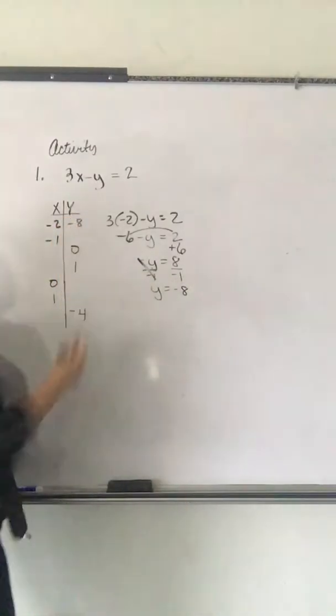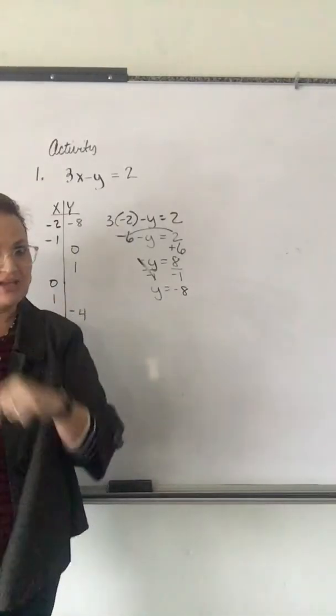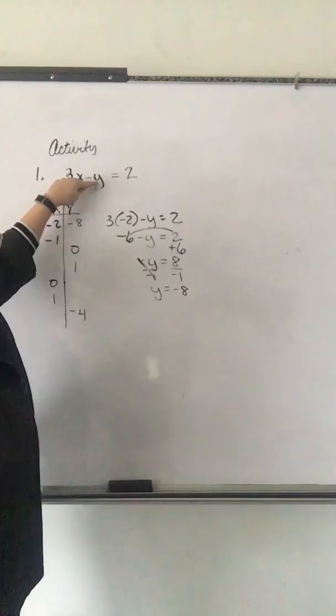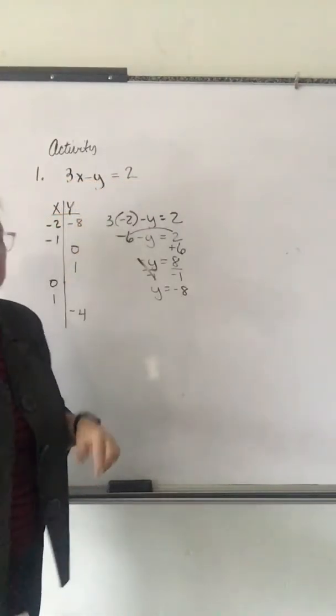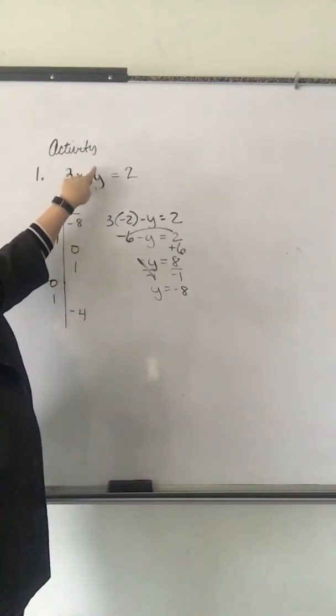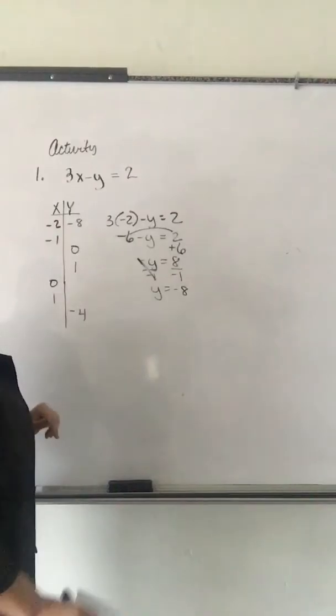So, negative 6 minus Y. I throw the negative 6 across the line, making that plus 6, bring down the minus Y equals 8. You have to divide by the negative sign if you have one to finish. So, Y equals 8 divided by negative 1, negative 8. So, there's a Y value.